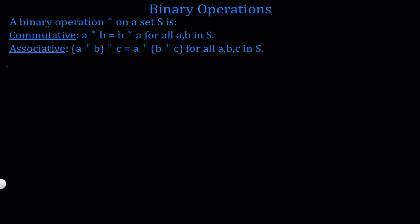Let's look at some examples. In the previous video, we showed that addition is a binary operation on the set of integers. Let's now check if it's commutative and associative. For commutativity, we need A plus B to equal B plus A for all A and B in the set of integers. For example, we need 3 plus 7 to equal 7 plus 3. Of course this is true — they both equal 10 — and this is the case for all elements in the set of integers.